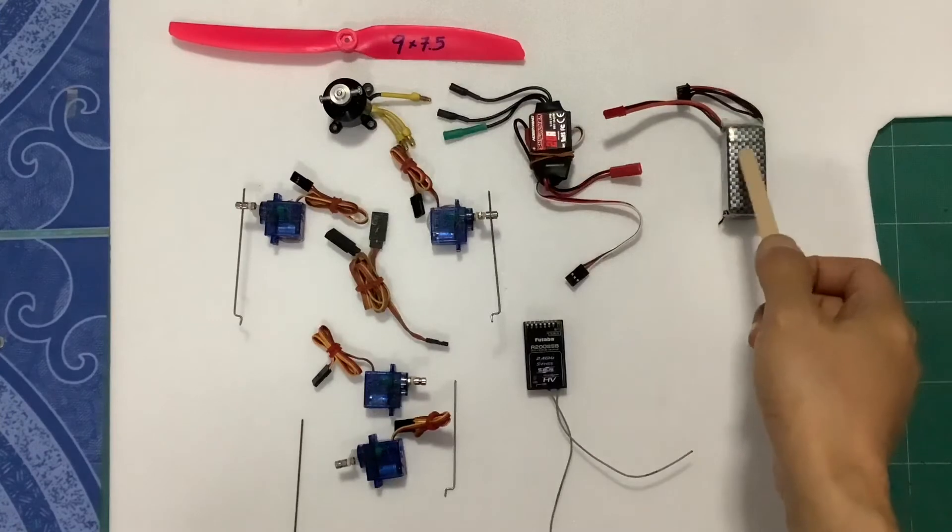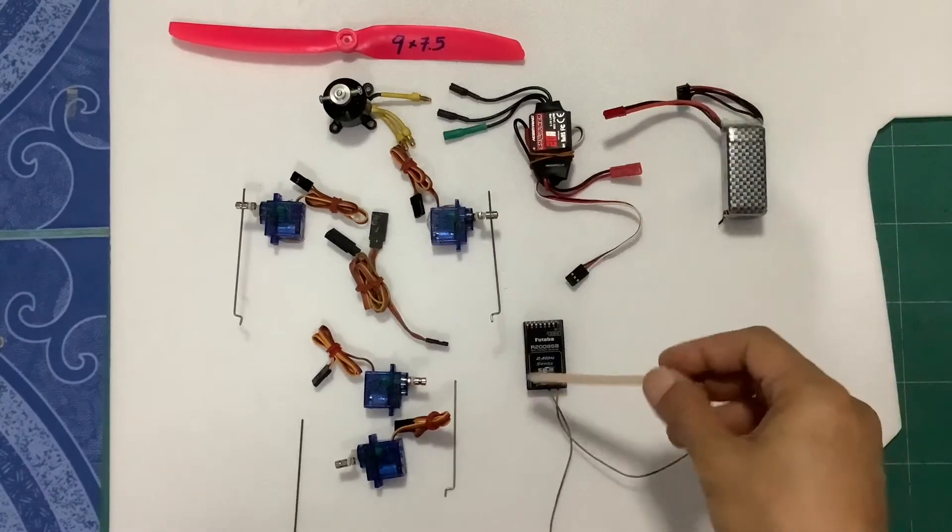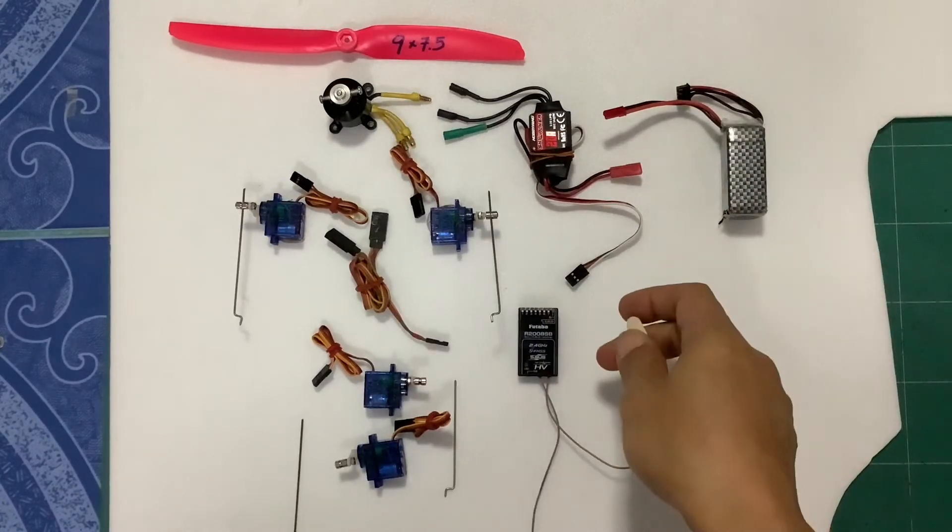And go to this one. The battery will connect to the ESC. And we have the last thing. This is the receiver.